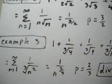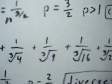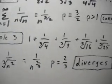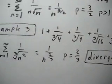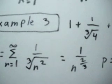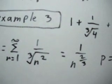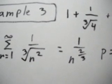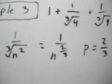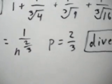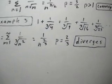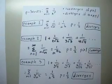Let's try example 3. Again, you're given a sequence and you have to make it into a series. So when you take that sequence and plug it into a series, you get from 1 to infinity of 1 over the cube root of n squared. That's the same thing as 1 over n to the 2/3. In this case your p is 2/3, and since it's less than or equal to 1, it diverges. And that's p-series.